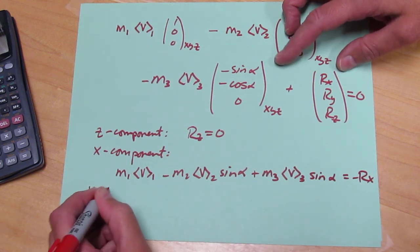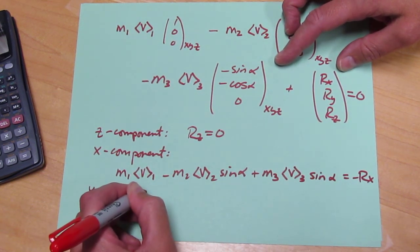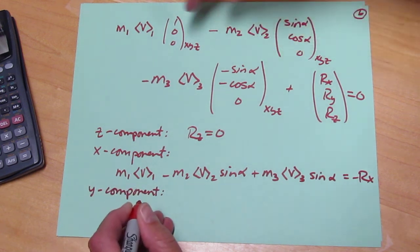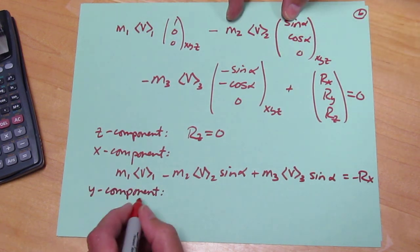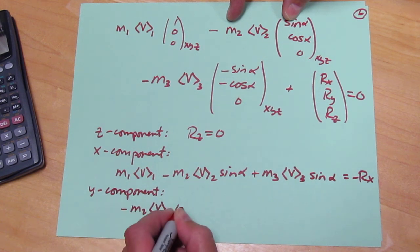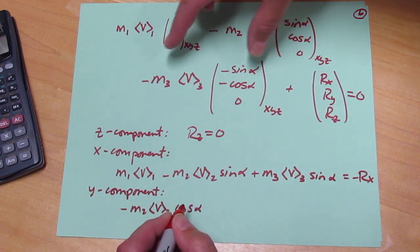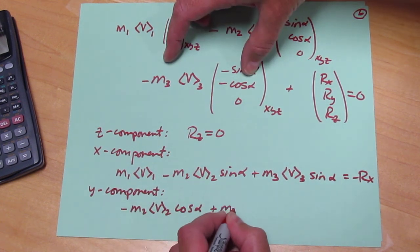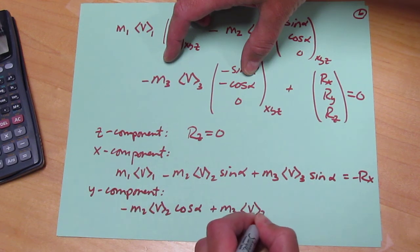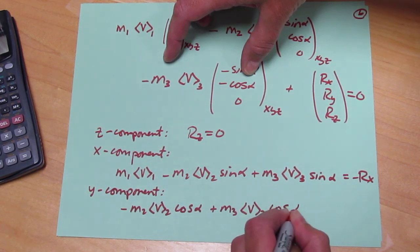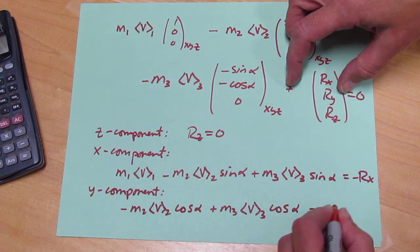And the Y component. We have 0 minus M2V at surface 2 cosine of alpha plus M3V at surface 3 cosine of alpha equals minus RY.